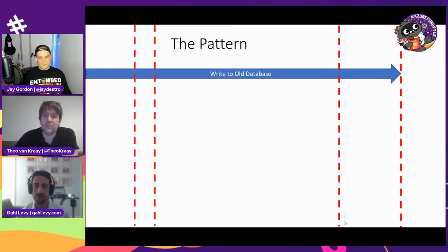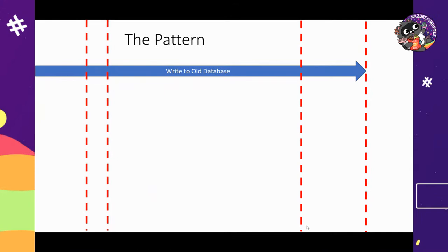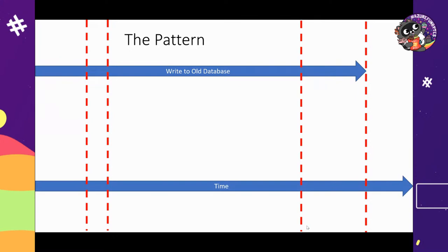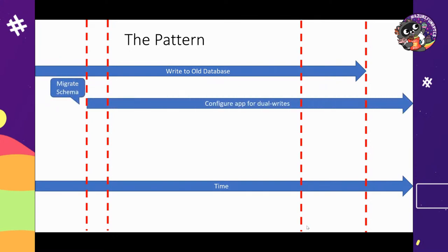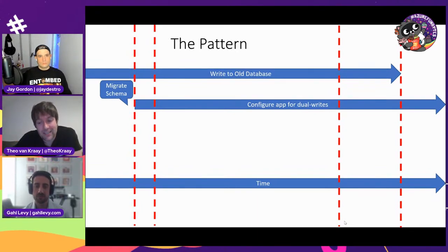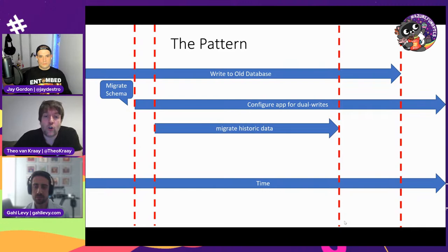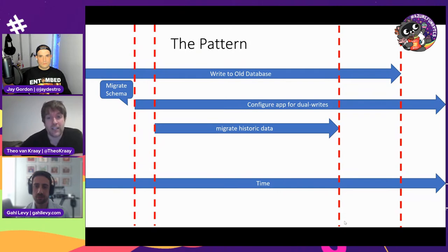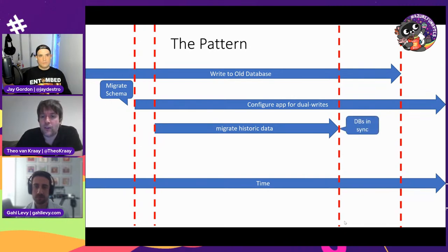Absolutely. This is sometimes known as a dual-write pattern. You'd configure your app to write to both the source and target database — typically writing to target asynchronously. If necessary, you'd also have something migrating or copying the historic data. Eventually, if your retention is short enough, the data in the old system becomes irrelevant. Once you feel your databases are in sync, you validate that the migration has no errors and no missing records, then cut over.